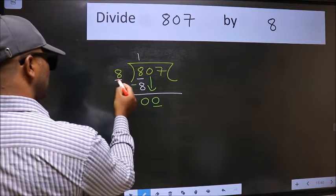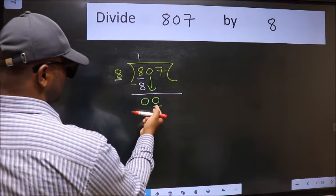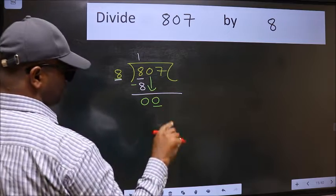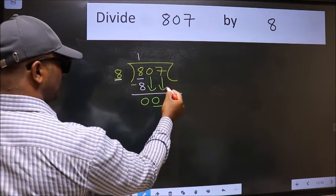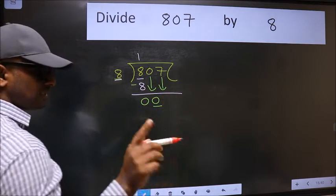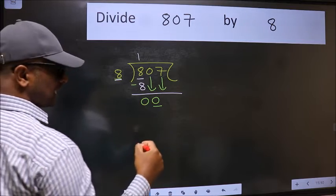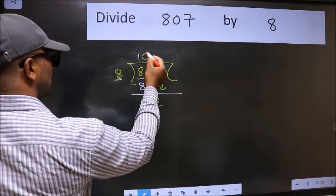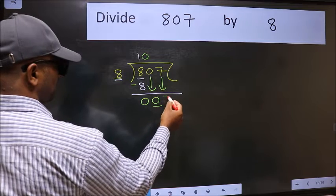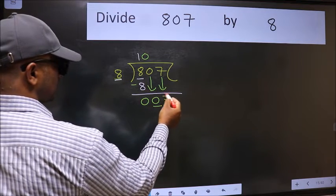Now here we have 0 and here 8. 0 is smaller than 8. So we should bring down the second number. And the rule to bring down second number is we should put 0 here. Then only we can bring this number down.